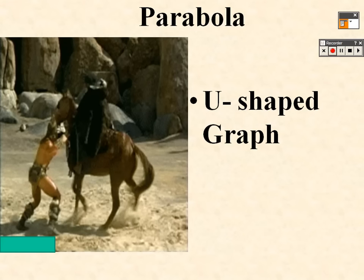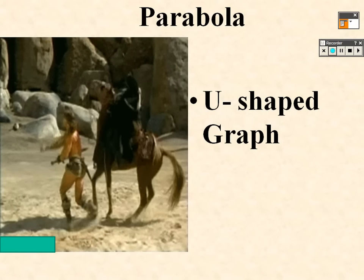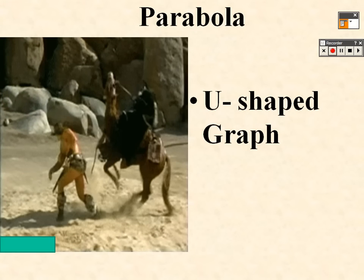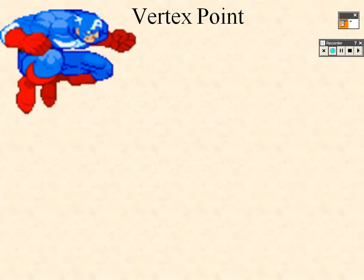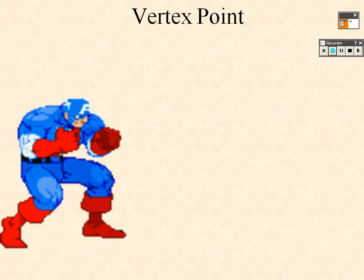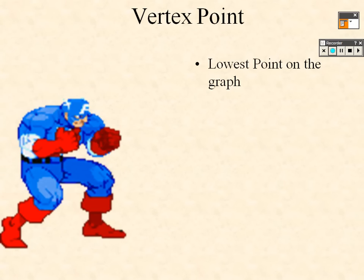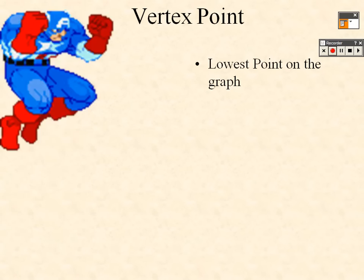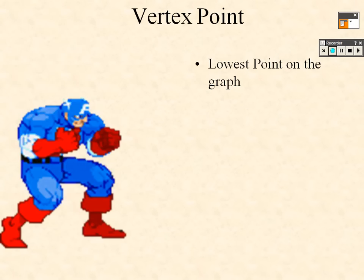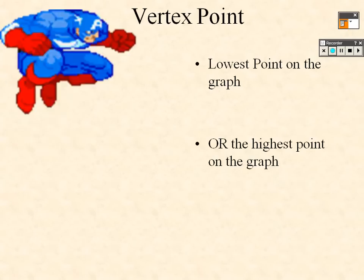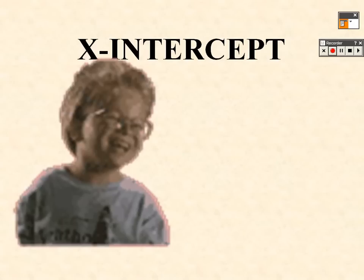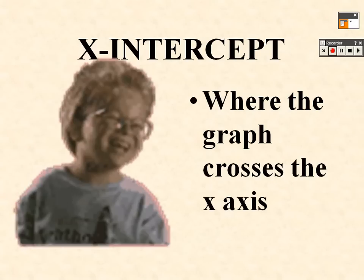Parabolas are U-shaped graphs. The vertex is the lowest or highest point on the graph — it's the bottom or top of your parabola. The x-intercept is where the graph crosses the x-axis.